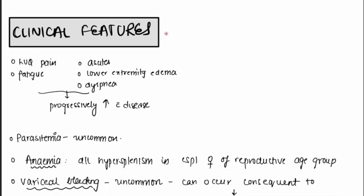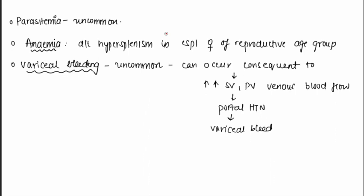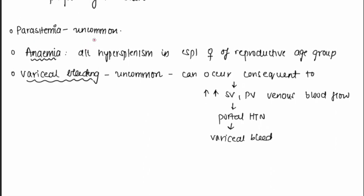Clinical features include splenomegaly, left upper quadrant pain, portal hypertension, ascites, lower extremity edema, fatigue, and dyspnea, all of which progressively worsen with disease progression. Notably, parasitemia is uncommon due to the exaggerated immune response. Anemia is due to hypersplenism, especially in females of reproductive age. Variceal bleeding is uncommon but can occur as a consequence of portal hypertension.